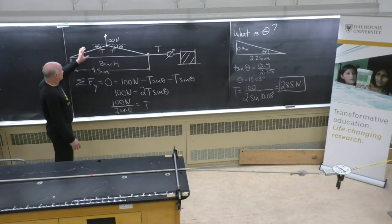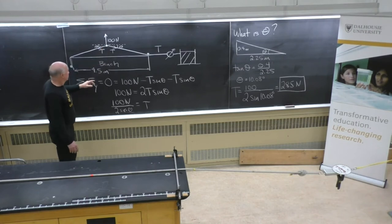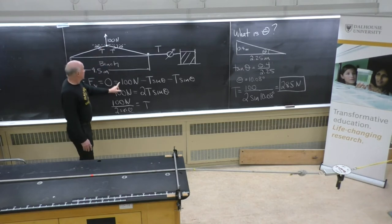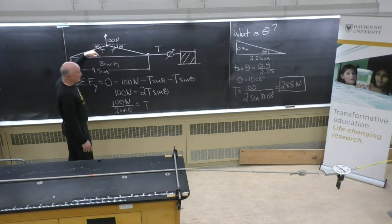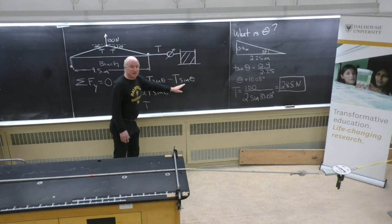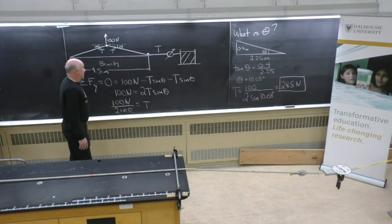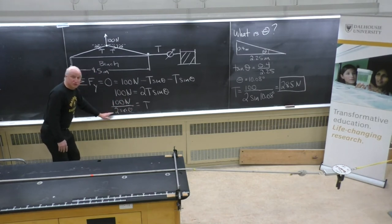So if you consider the sum of the forces in the y direction, they must add up to zero because this knot is not accelerating. So you have 100 newtons up, and T sin theta, the y component acting down from each side of the rope. So we have minus T sin theta, minus T sin theta. So then we can solve for the tension. The tension is 100 newtons divided by 2 sin theta.